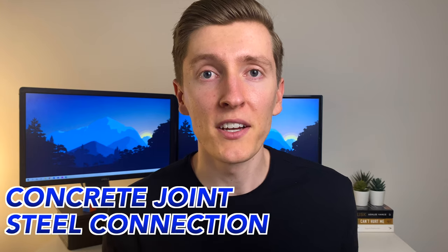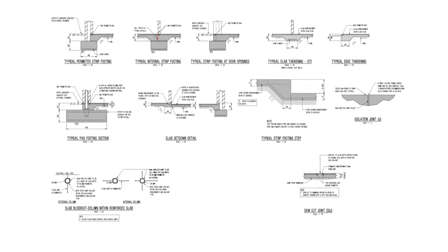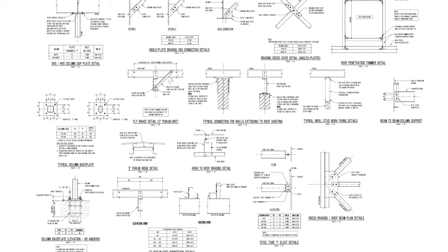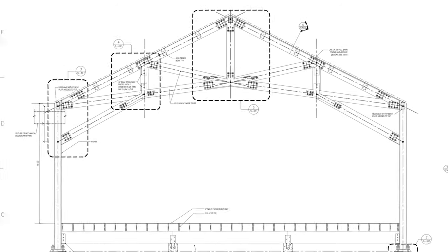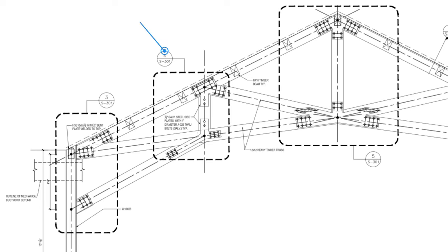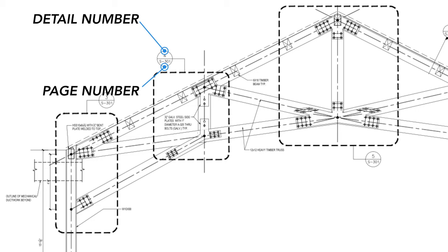Next, let's talk about something called a detail. A detail is basically used to show more specific information in a particular area — for example, at a concrete joint or at a steel connection — and some of the specific information can be things like dimensions, reinforcement bar size, and bolt and weld configuration. Where the designer wants to provide a detail, it will usually show a box or circle around a specific area with a line attaching to a circle, and the information inside this circle works the exact same way as the referencing system for a section: the detail number is at the top and the page number the detail is drawn on is at the bottom.